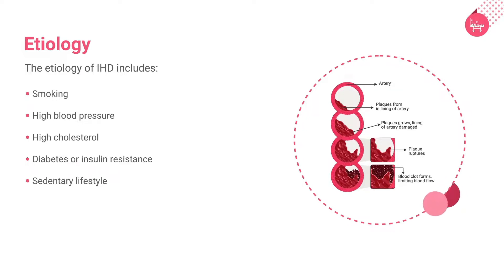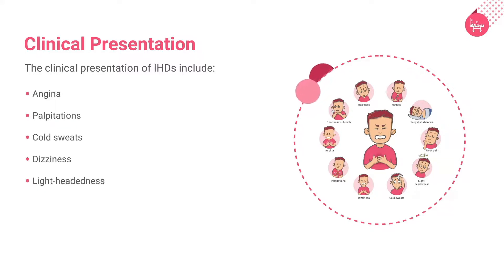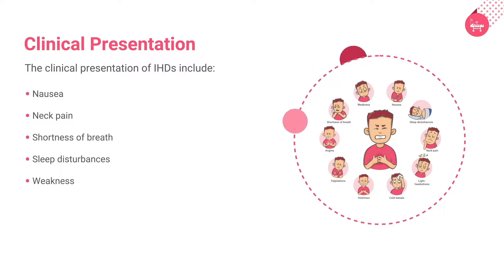Let us discuss the clinical presentations of IHD. An acute coronary event may cause the following symptoms: angina, which can feel like pressure, squeezing, burning, or tightness during physical activity. The pain or discomfort usually starts behind the sternum, but can also occur in the arms, shoulders, jaw, throat, or back. The pain may feel like indigestion. Other symptoms include palpitations, cold sweats, dizziness, lightheadedness, nausea, neck pain, shortness of breath especially with activity, sleep disturbances, and weakness.